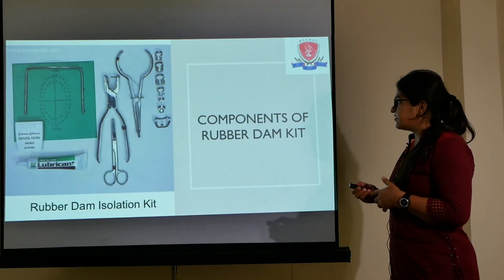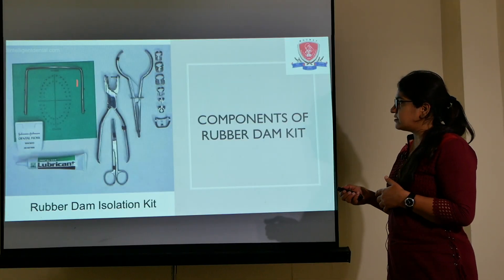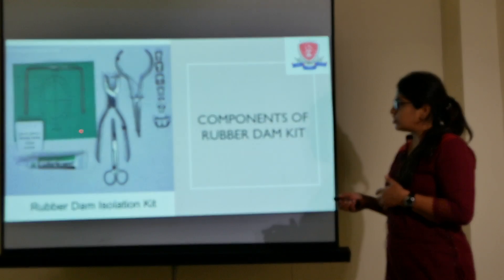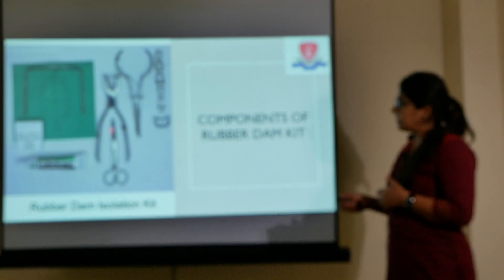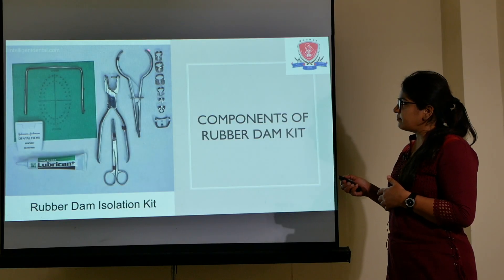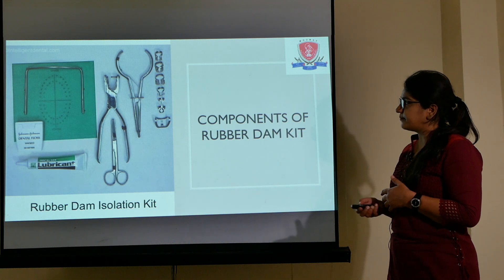These are the various components of the rubber dam kit: there is a frame, a sheet, the lubricant, the punch, the forcet, and the various types of clamps.